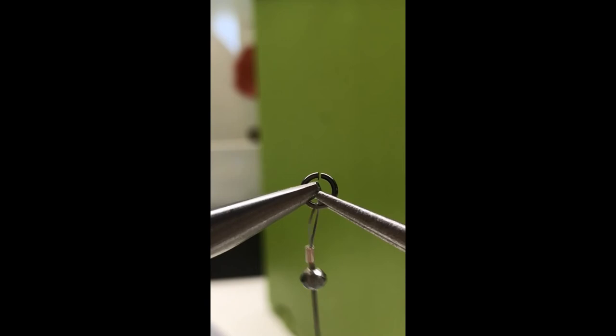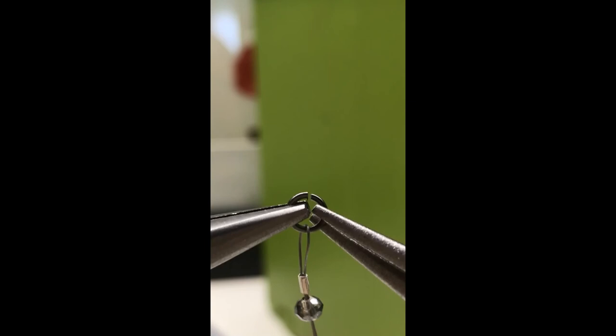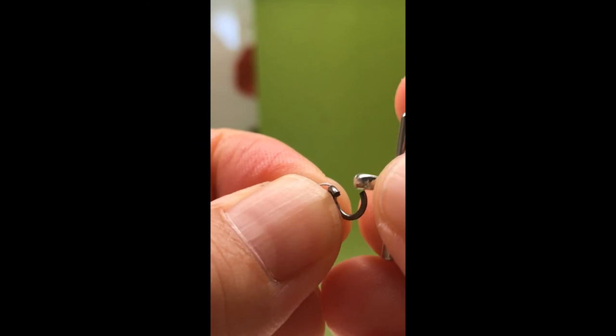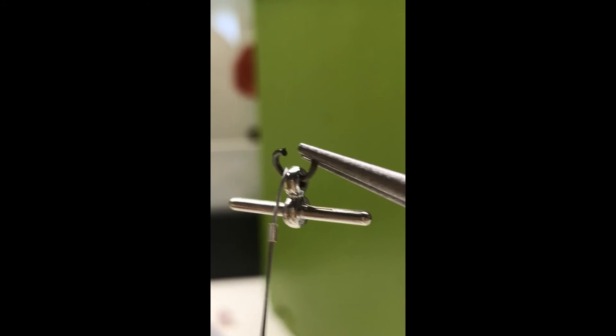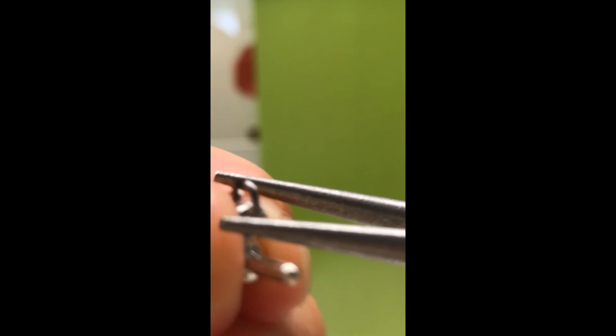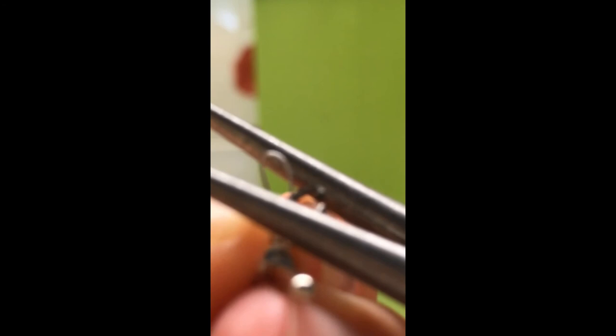The jumping ring basically connects your chain and the clasp. This is how the jumping ring works. It has a cut, you just use two pliers to open the cut, then you put the end of the chain in this and also the connection clasp here. Then you can close the ring and pull them out like this.